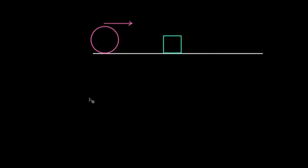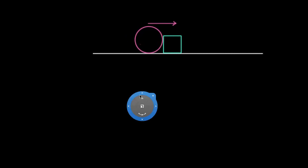So here's a pink ball rolling toward a green cube that's sitting at rest on a frictionless surface. When the pink ball hits and slams into the green cube, it's gonna exert a force to the right on the green cube, and the green cube's gonna speed up.